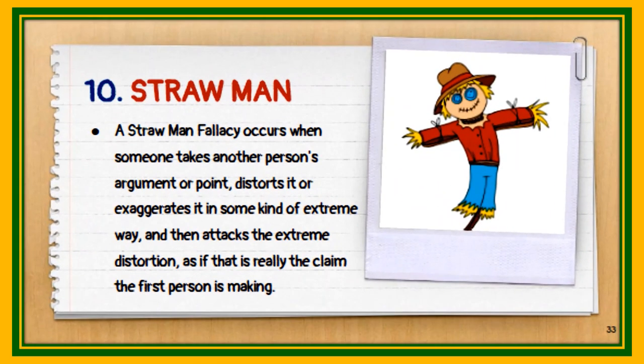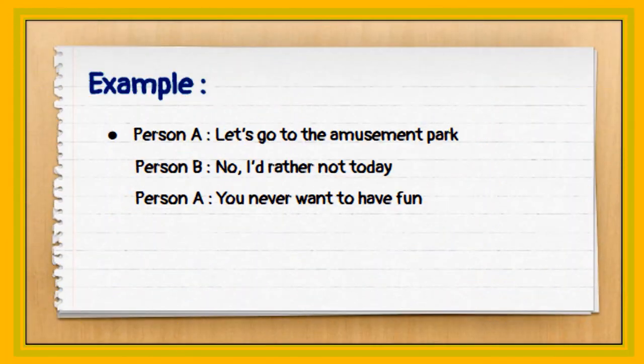The next fallacy is the strawman. It occurs when someone takes another person's argument, distorts or exaggerates it in an extreme way, and then attacks that extreme distortion as if it were the original claim. For example, Person A said: 'Let's go to the amusement park.' Person B responded: 'No, I'd rather not today.' So Person A concluded: 'You never want to have fun.'